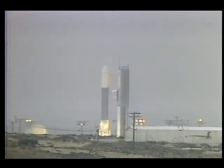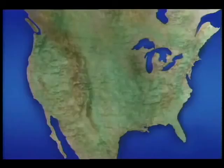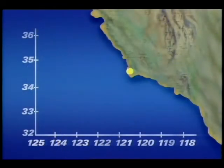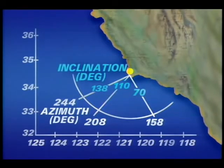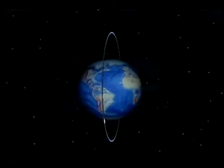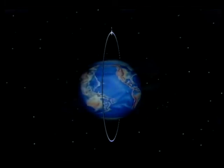To obtain an orbit with an inclination greater than 57 degrees, the spacecraft is launched from Vandenberg Air Force Base in California. Vandenberg offers the opportunity for southerly launches with orbit inclinations between approximately 70 degrees prograde through 138 degrees retrograde. A significant advantage of launching from Vandenberg is the capability to economically achieve polar orbits with ground tracks covering all latitudes from the North Pole to the South Pole.